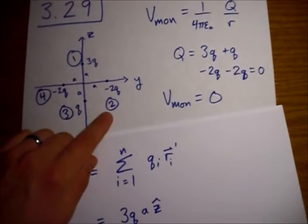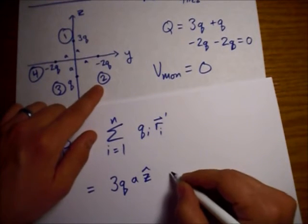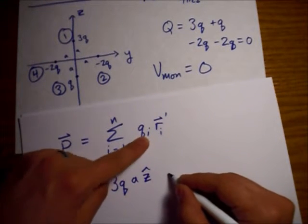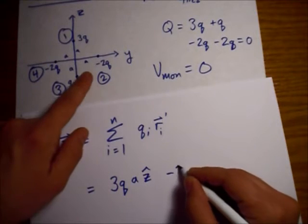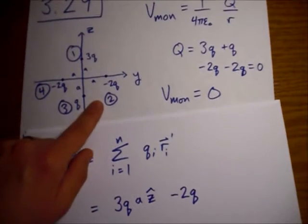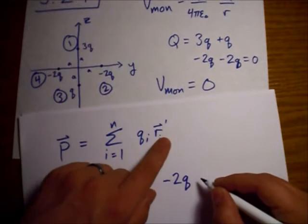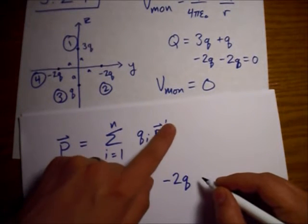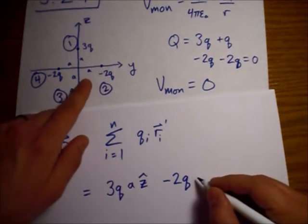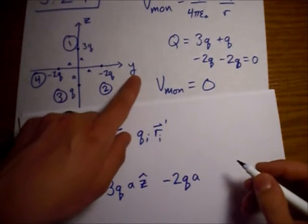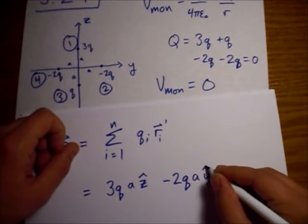Now, let's move on to point number 2. Our q2, q sub 2, is minus 2q here. Our magnitude of this r prime vector is a, again. And this time, we're in the positive y hat direction.